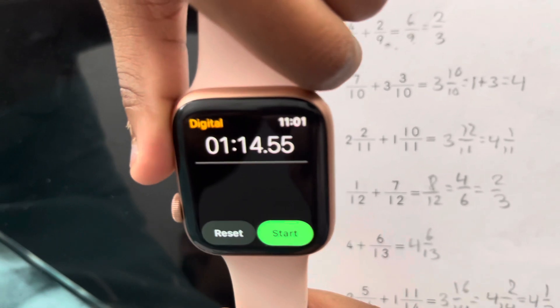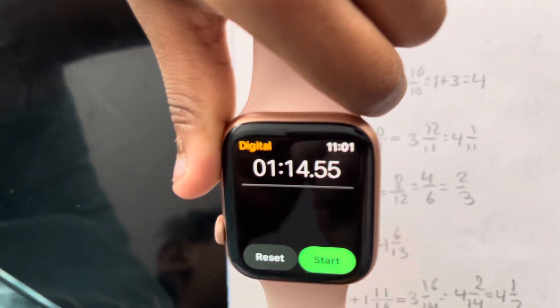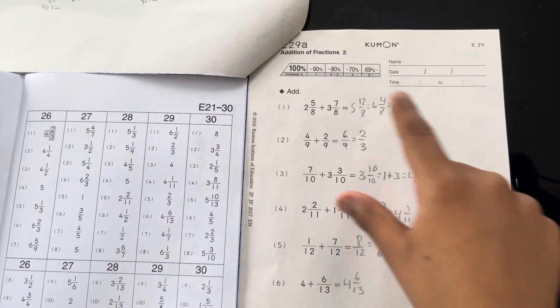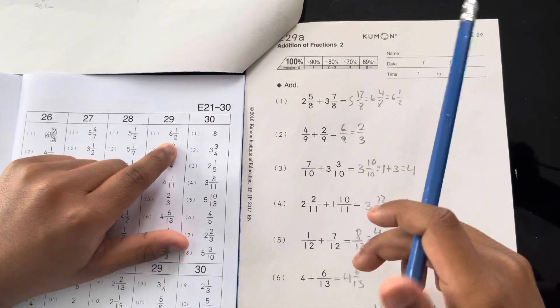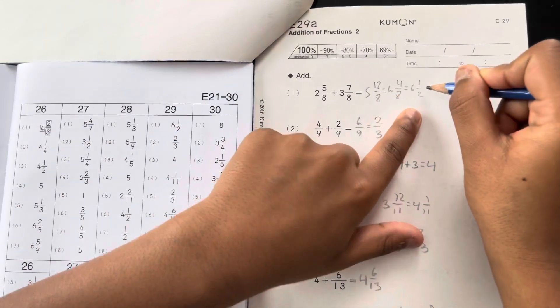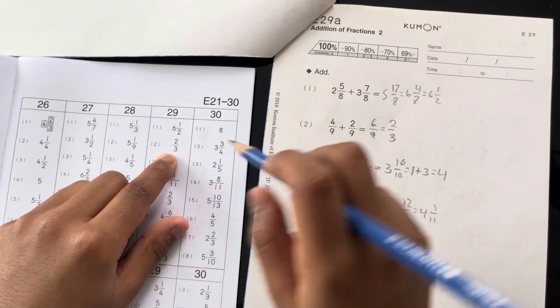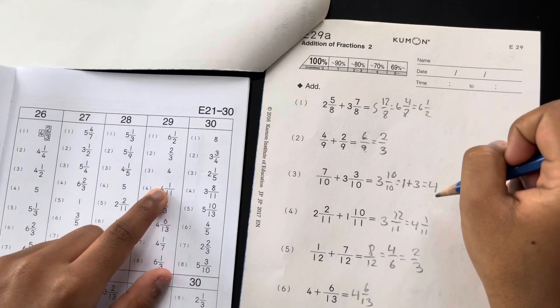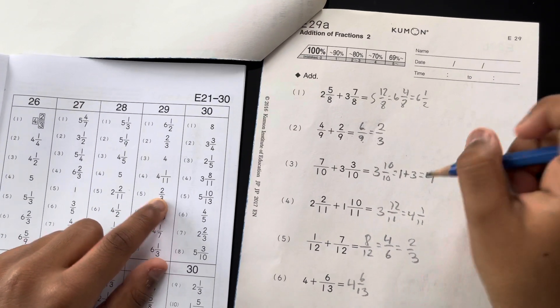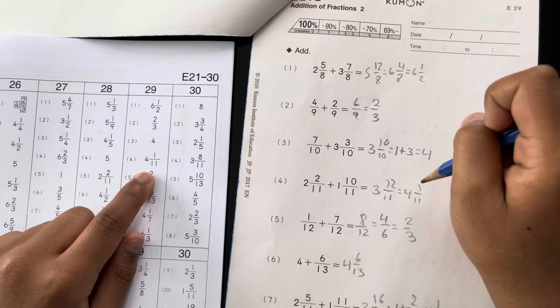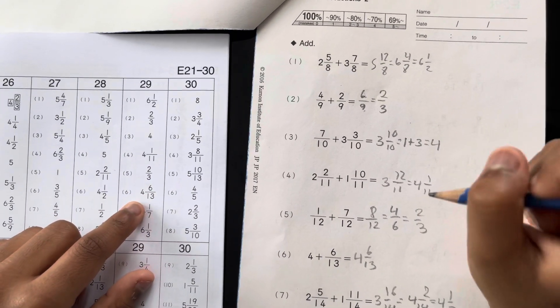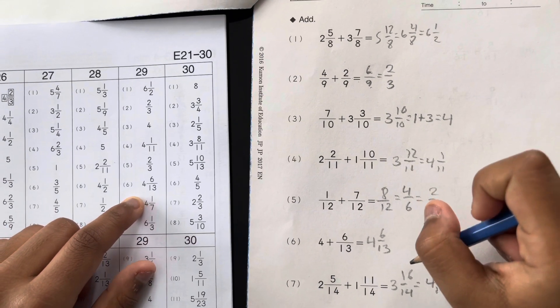I did it in 1 minute 14 seconds. Let's see if it's correct. E29, okay. 6 and 1 over 2, that's correct. 2 and 3, that's good. 4, that's correct. 4 and 11, that's correct. 2 over 3, that's correct. 4 and 6 over 13, that's correct.